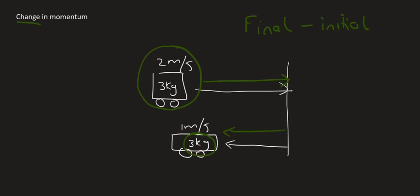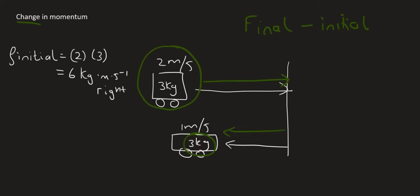What you can do is first work out the initial momentum. We know from the previous lesson that momentum equals mass times velocity. So that will be 3 times 2, which equals 6. But you must give units and you must give direction.